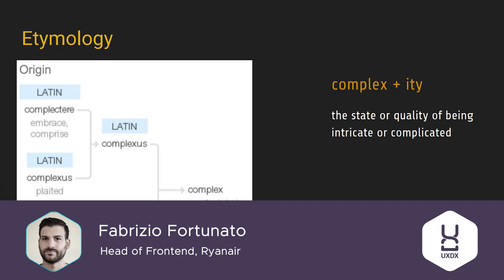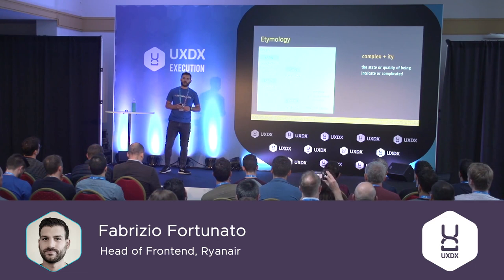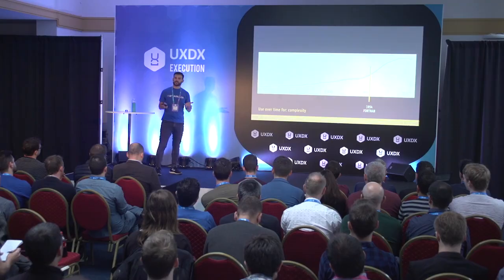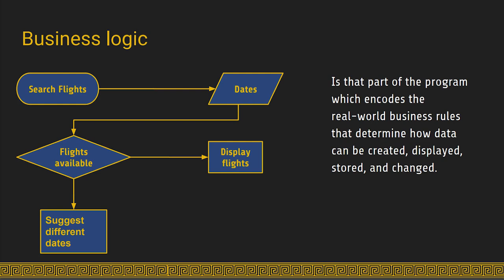Complexity means the state or quality of being intricate or complicated. It derives from Latin 'complexus.' If we look at the usage over time — this is from Google — you can see that in the 1950s the word started being really overused. And in 1954, the first programming language, Fortran, was released. I do believe it's developers' fault, actually, for this overuse of the word complexity.